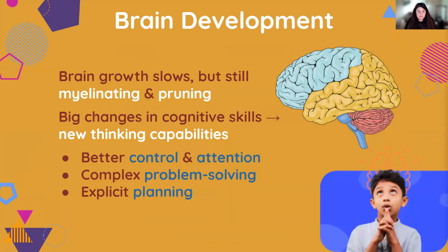Lastly, brain development. Brain growth is slowing down during this period, but it is still myelinating and pruning. The early years of middle childhood — from about six to eight years old — are said to be a period with very significant changes in cognitive skills. The brain doesn't grow much in size, but there are very complex changes in how it's functioning internally and organizing information. The maturing brain gives way for new thinking capabilities, like better control and attention, the ability to solve complex problems, and explicit planning. That leads us into the next section: cognitive development.